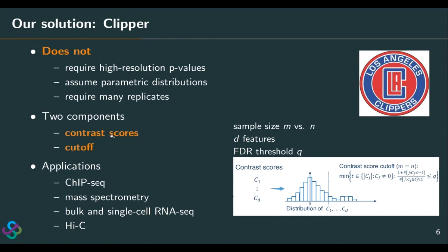So what does Clipper require? It has two components: one is contrast scores, one per feature; the second is a cutoff on the contrast scores. Suppose we have D features and sample sizes M and M under the two conditions, and we have an FDR threshold Q, say 5%. Clipper needs a way to construct contrast scores, say C1 to CD. The theoretical assumption Clipper requires is that the contrast scores of features from the null — uninteresting features — should be symmetric around zero, while contrast scores for the interesting features should be largely positive on the right tail. Clipper then leverages a theory for setting a cutoff on the contrast score so that FDR can be controlled.